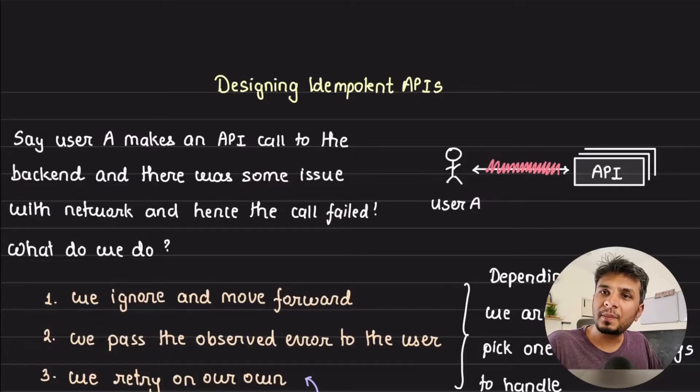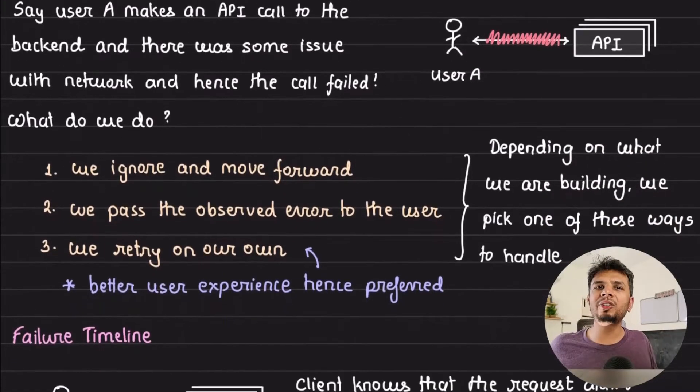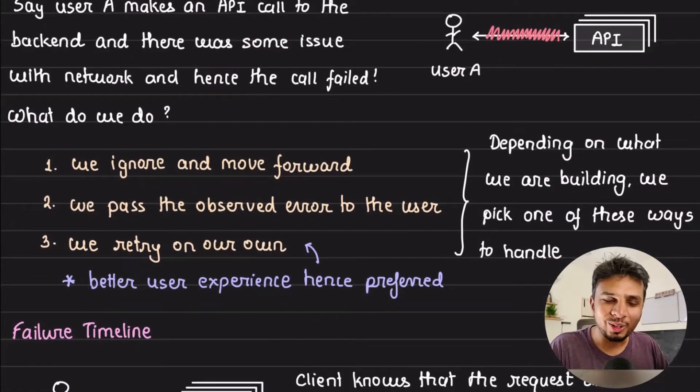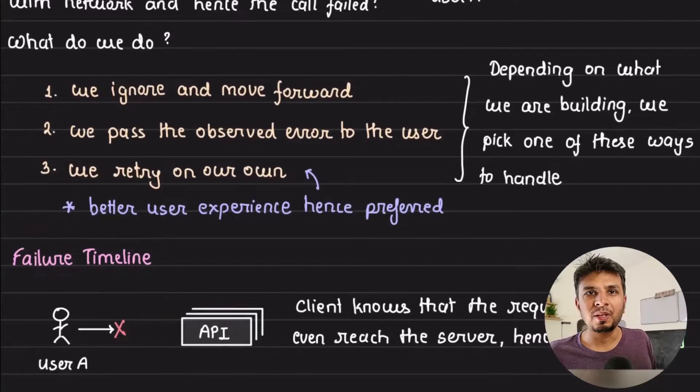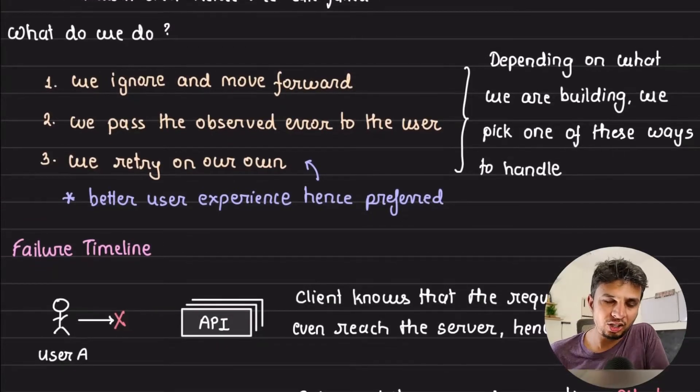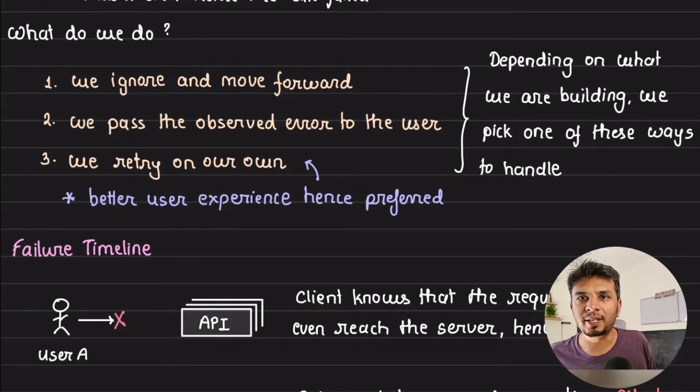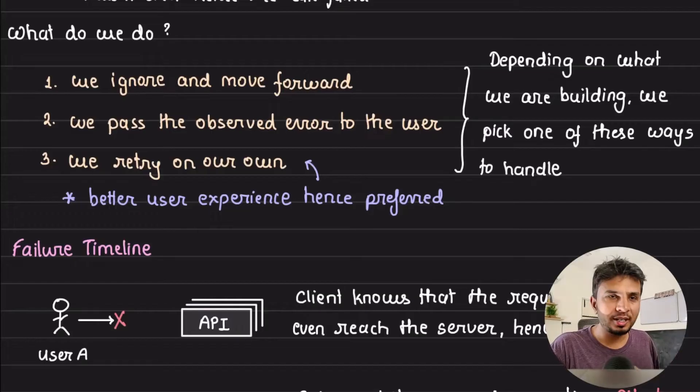Say user A makes an API call to the backend and there was some issue with the network because of which the call failed. In this situation we can do one of these three things: first we can ignore the error and move forward; second we can pass the observed error to the user and then let user decide if he or she would want to retry; third we can do an automatic retry on our own. Typically you would think that automatic retries give the best user experience, but depending on where the failure happened it would determine if we could retry or not.